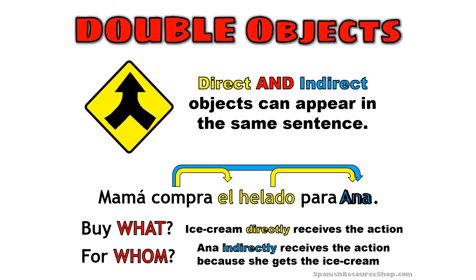We've seen that sometimes direct and indirect objects can appear in the same sentence. For example, mamá compra el helado — that's your direct object, because you ask 'she buys what?' Para Ana. Ana would be your indirect object because she's receiving el helado, which is the direct object.